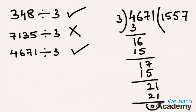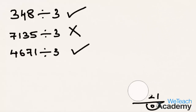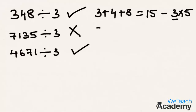Now let us find the sum of these digits and check whether this sum is exactly divisible by 3 or not. In the first example, the sum of its digits is 3 plus 4 plus 8, which equals 15, and 15 is exactly divisible by 3, since 3 times 5 is 15. For the second example, the sum of digits is 7 plus 1 plus 3 plus 5, which equals 16. The number 16 is not exactly divisible by 3.